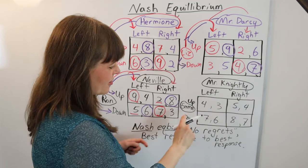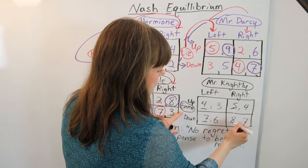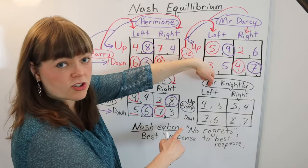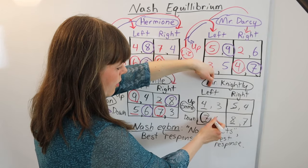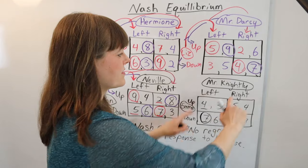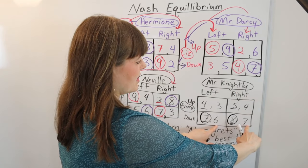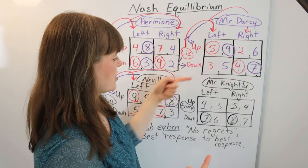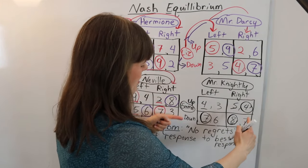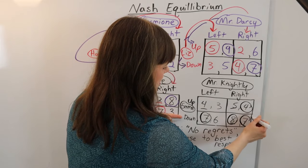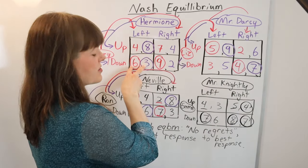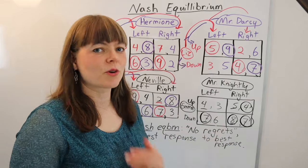Let me do one without the colors. Emma is player one, meaning she cares about the first payoff listed. She's going to check Mr. Knightley's strategies. If Mr. Knightley went left, she would prefer the seven over the four. If Mr. Knightley went right, she would prefer the eight over the five. Then we flip perspectives and think about Mr. Knightley's perspective, which is the second payoff, yet we check Emma's strategies. If Emma went up, he would prefer the four rather than the three. If Emma went down, he would prefer the seven rather than the six. So in every single box where there are two circles in the same box, that's a best response to a best response, or a no-regrets strategy.